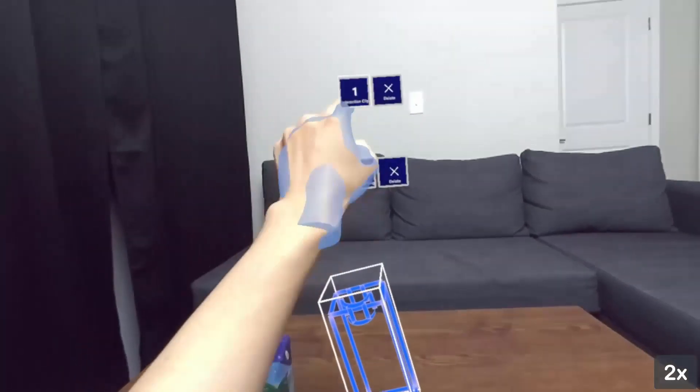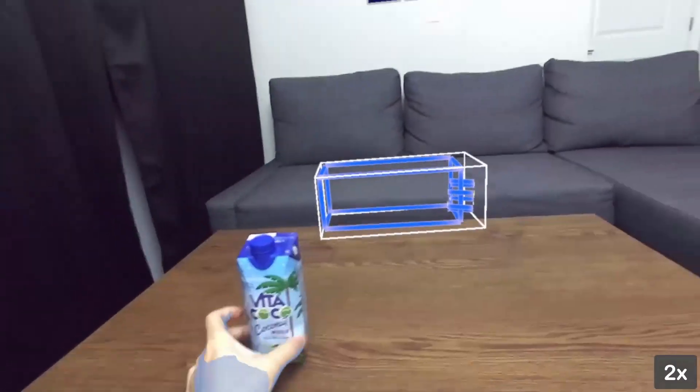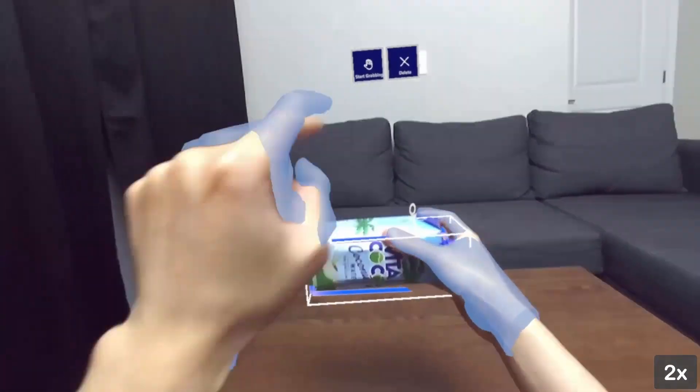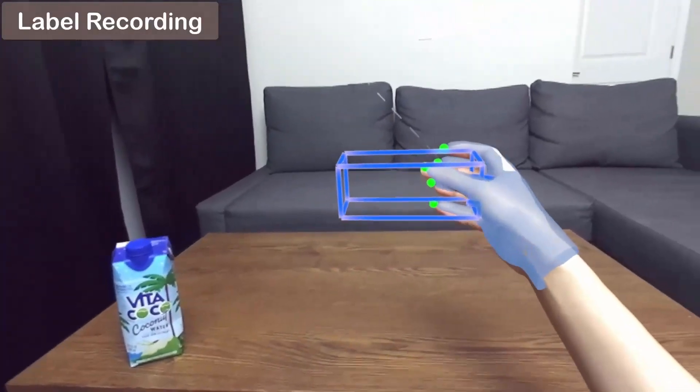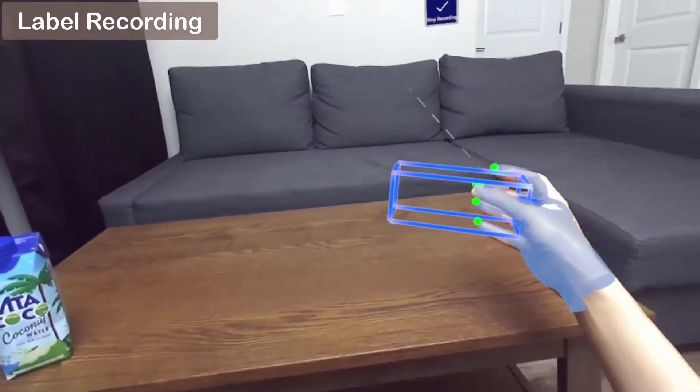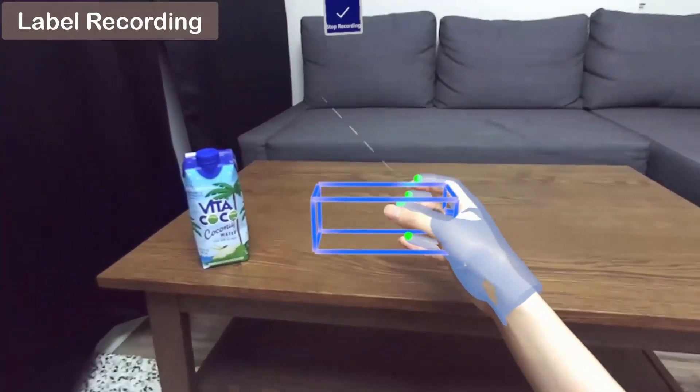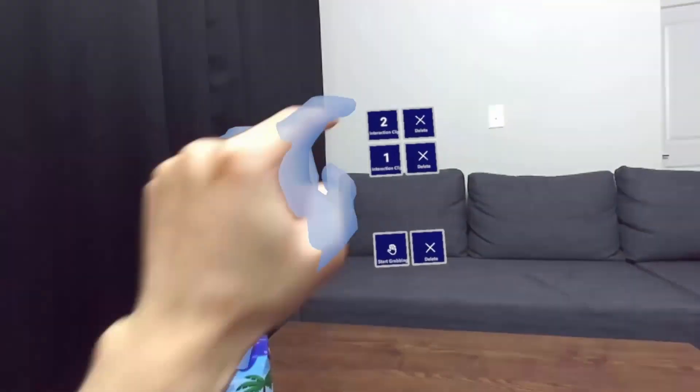The user can repeat the same process with other preferred grabbing gestures and object poses until the progress indicator reaches 100%. To improve manipulation accuracy, Arnotate guides the user to either mainly move the object without much rotation or only rotate the object following the prior work's suggestions.